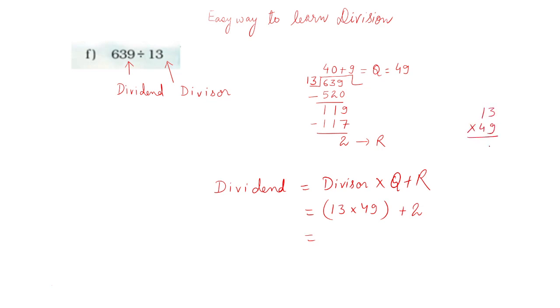When you multiply 13 by 49, what you will be getting? 9 times 3, 27, 7 you will be writing over here, 11, and then 2, then 1. So here you are getting 637 plus 2. You can check your answer. Your dividend is 639 which is equal to this dividend.